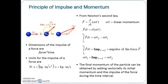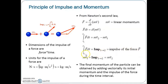If we consider a particle of mass M acted upon by a force F, Newton's second law can be expressed as F = MA, or F = d(MV)/dt, where MV is the linear momentum of the particle. By multiplying both sides by dt and integrating from time T1 to T2, we get the integral of F dt equals MV2 minus MV1. The integral of F dt from T1 to T2 is a vector known as the linear impulse of the force F during the interval T1 to T2.